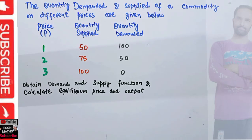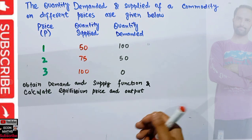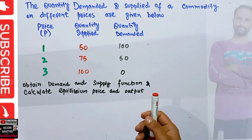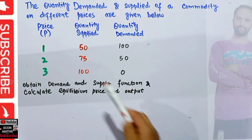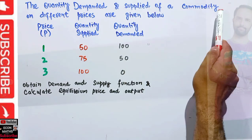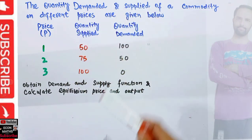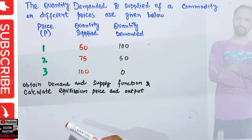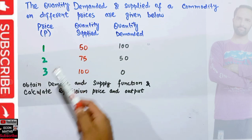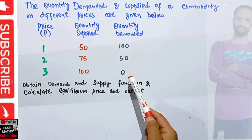In this video, we will learn how to derive demand and supply functions from the given quantity demanded and supplied schedule of a commodity. The question provides the prices, quantity supplied, and quantity demanded.